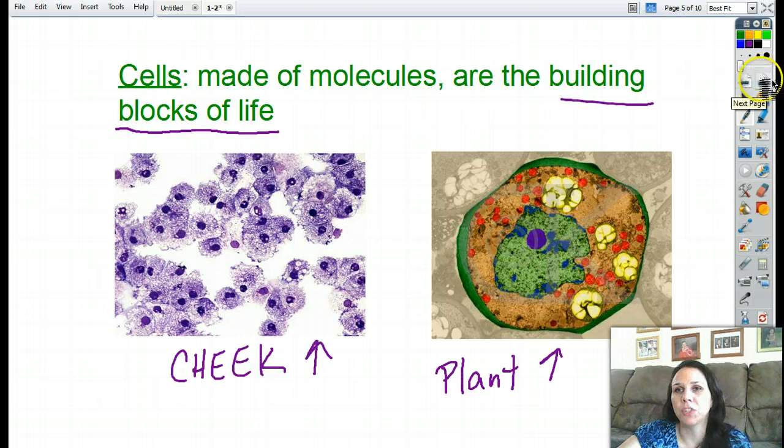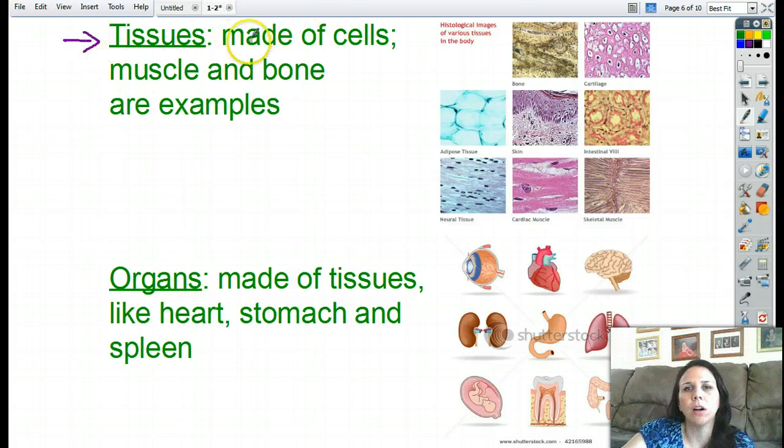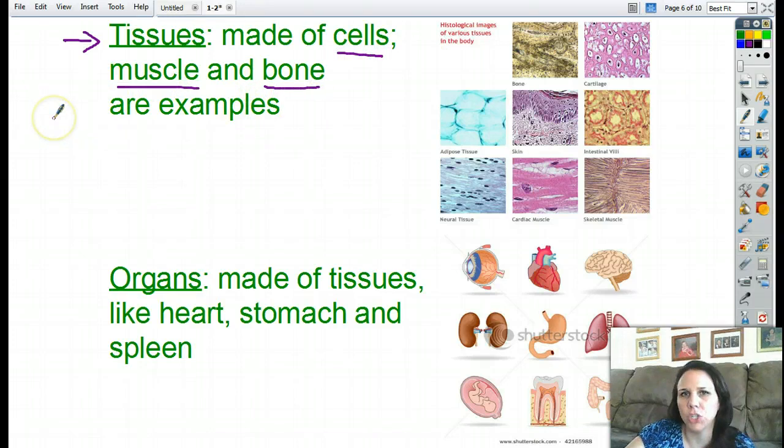Now, what do you get when you put a whole bunch of cells together? You get tissues. So tissues are just parts of your body that are made out of cells. For example, muscle and bone are examples of tissues. Here's a picture showing all sorts of tissues.